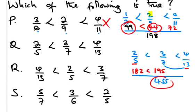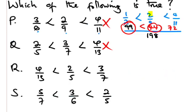Let's check option R: 4/13 < 2/5 < 3/7. Using the common denominator 455, we have 4/13 equals 140, 2/5 equals 182, and 3/7 equals 195. This is true: 140 is less than 182 is less than 195. The correct answer is option R.